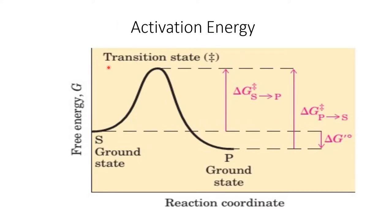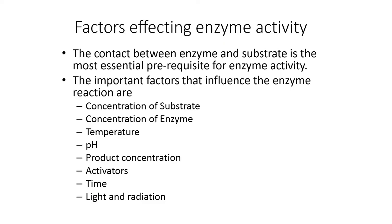Any reaction does not proceed directly to product formation. There is always a transition state between the ground state and the product. Activation energy is the difference between the energy level of the ground state and the transition state. The function of a catalyst is to increase the rate of the reaction; it does not affect the reaction equilibrium. So enzymes simply lower the activation energy.